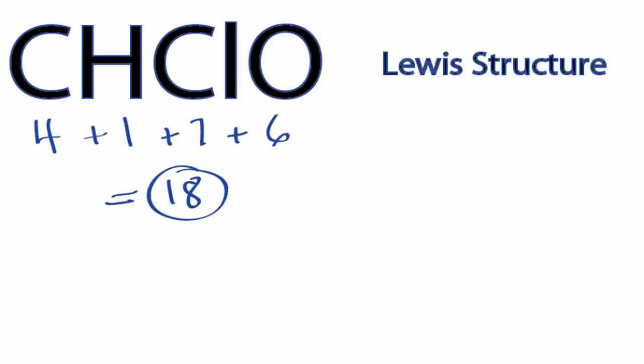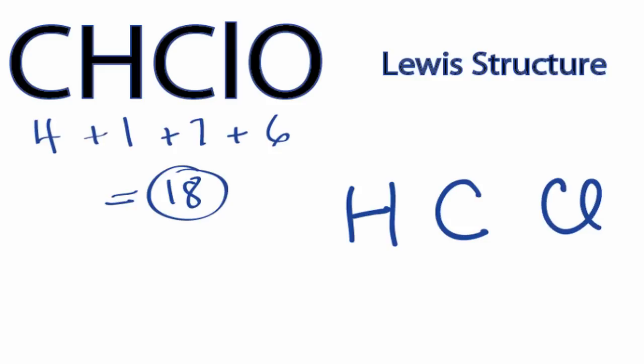Hydrogens always go on the outside of Lewis structures, and when we compare carbon to the chlorine and the oxygen, carbon is the least electronegative. We'll put the carbon in the center, put our hydrogen on the outside, our chlorine over here, and our oxygen up here.